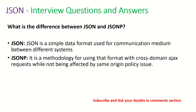What is the difference between JSON and JSONP? JSON is a simple data format used as a communication medium between different systems. JSONP is a methodology for using that format with cross-domain AJAX requests. So whenever you are making cross-domain AJAX calls, you want to use JSONP.